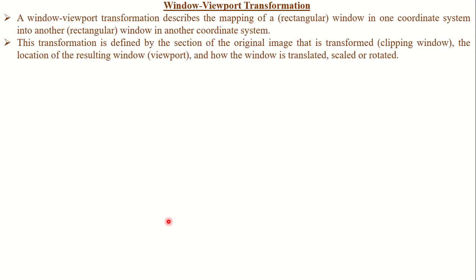Now there are some transformations. We want to convert the window into the viewport, and this involves some mathematical expressions. A window-to-viewport transformation describes the mapping of a rectangular window from one coordinate system into another. The real-world coordinate system is converted into the 2D coordinate system — one coordinate system converted into another is simply called a window-to-viewport transformation. This transformation is defined by the selection of the original image that is transformed, called the clipping window. The clipping window contains only the interesting part; other parts are clipped. It also depends on the location of the resulting viewport and how the window is translated, scaled, or rotated.